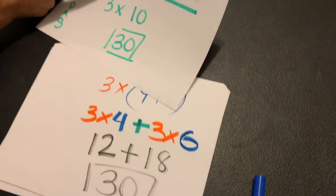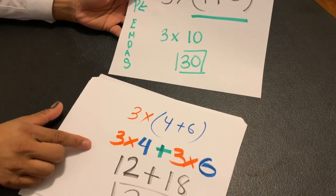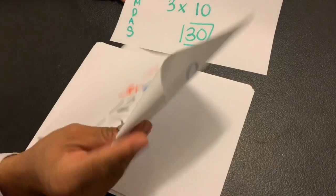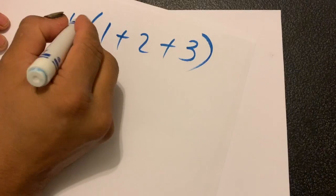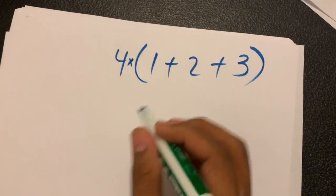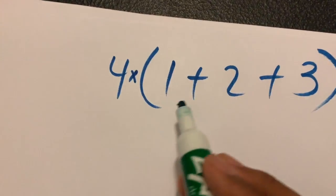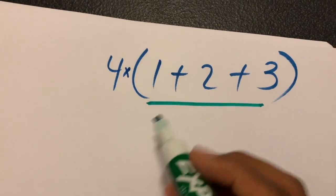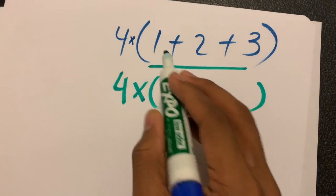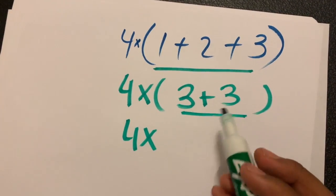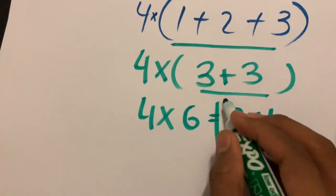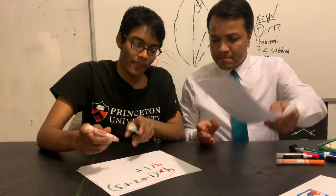You see? 30. This one you used the traditional PEMDAS way, and this one you used the distributive property. Can I challenge you with one more problem? Sure! Four times open-parenthesis one plus two plus three close-parenthesis. Make sure you see the multiplication sign. Using PEMDAS: one plus two is three, three plus three is six, so four times six — 24.